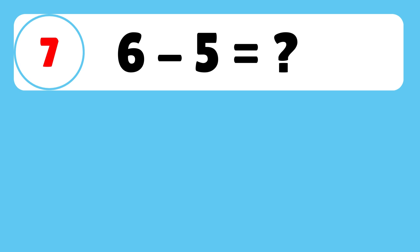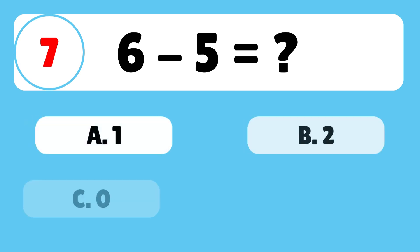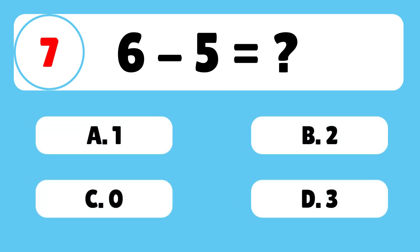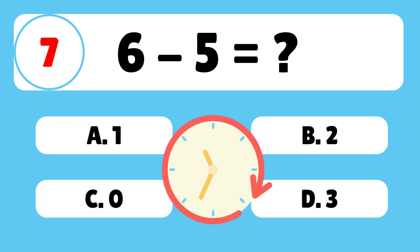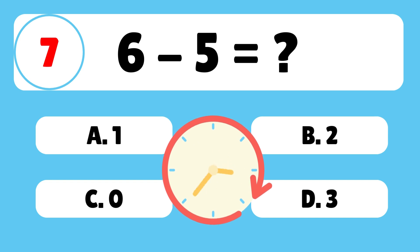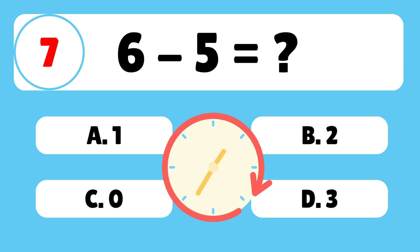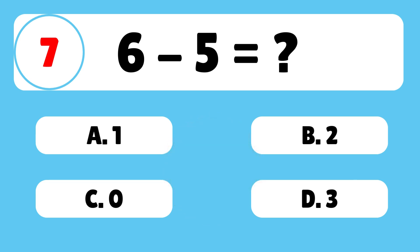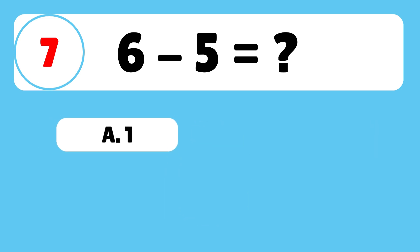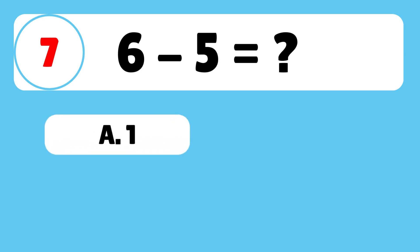Question 7: What is 6 minus 5? The answer is A. 6 minus 5 is equal to 1.